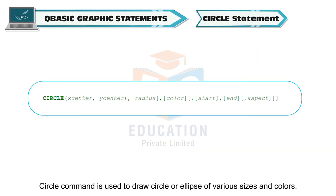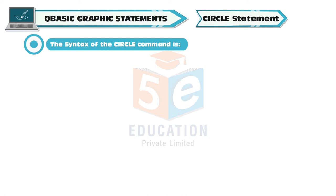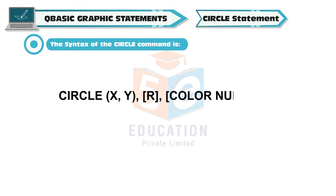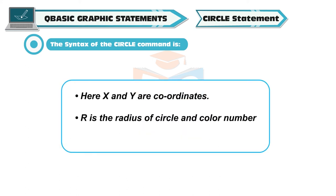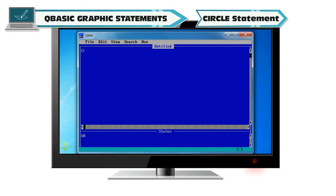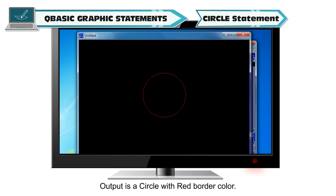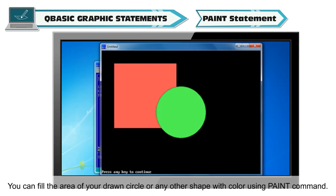Circle statement: The circle command is used to draw a circle or ellipse of various sizes and colors. The syntax of the circle command is: CIRCLE (x,y), r, color number. Here x and y are coordinates, r is the radius of the circle, and color number is the border color. Example: CLS, SCREEN 12, CIRCLE (320,200),80,4, END. The output is a circle with a red border color.